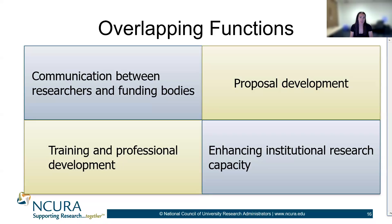In summary, these overlapping areas of research administration and research development demonstrate the complementary nature of these functions. The collaboration ensures that researchers receive comprehensive support — from identifying funding opportunities and developing proposals to ensuring compliance and fostering a strong institutional research capacity. By working together, RA and RD enhance the efficiency, effectiveness, and overall success of the institution's research endeavors.